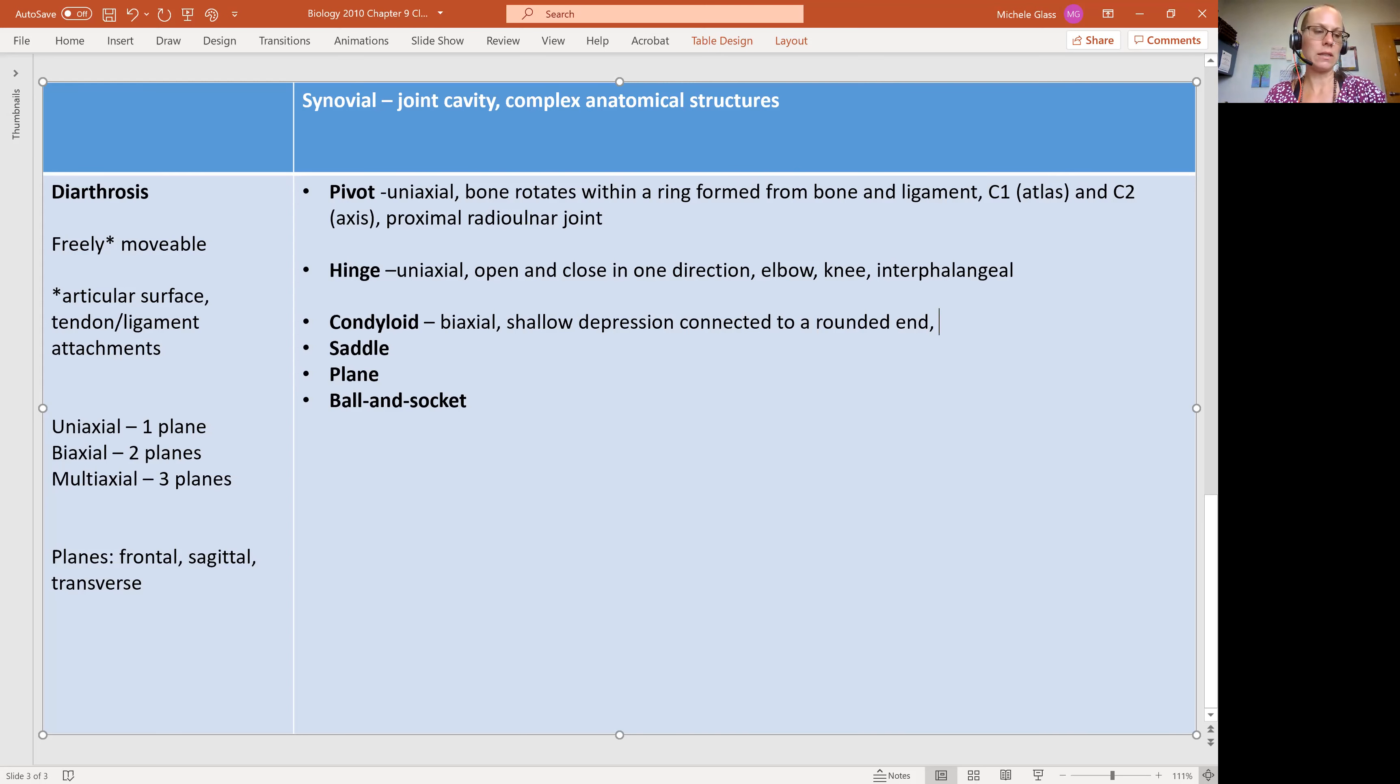So one bone has a depression, and the other bone that connects in has a rounded end. And we're going to see this in your metacarpophalangeal joints. That's your knuckle, that's your knuckle joint there.